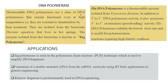Thermostable DNA polymerases are a class of DNA polymerases that remain functional even at high temperatures — they are resistant to denaturation by heat treatment. They are isolated from the bacterium Thermus aquaticus, which lives in hot springs. The enzyme isolated from this bacterium is known as Taq polymerase.